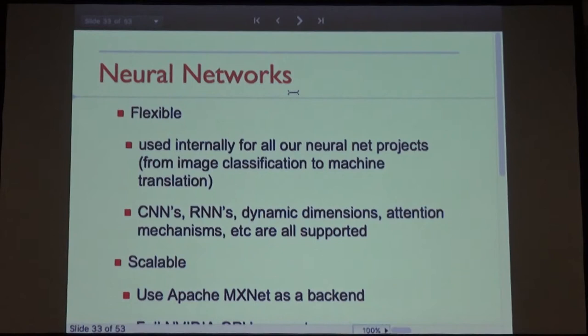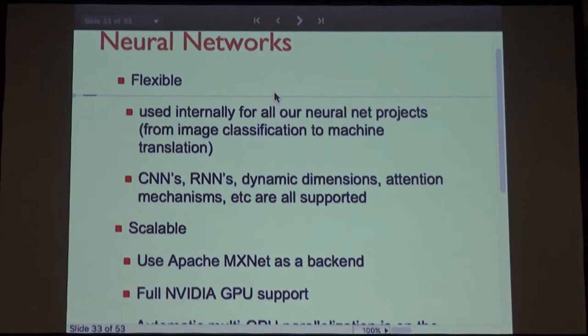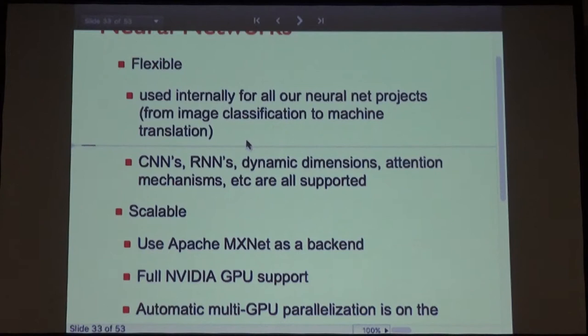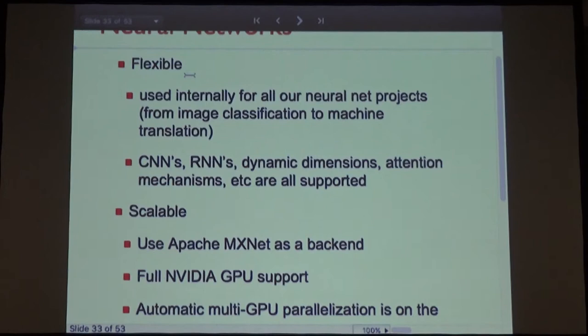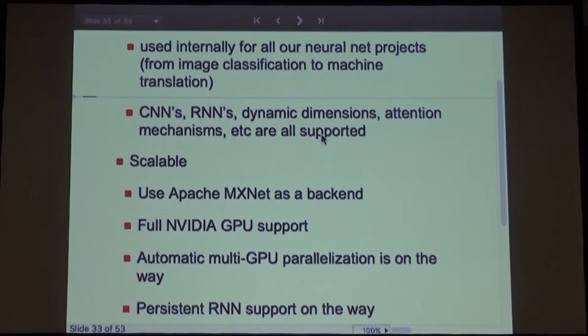Neural networks — this is more my domain. There's a proliferation of neural network frameworks. Even yesterday, Caffe 2 was released. Our framework is used for our own projects from image classification to machine translation to speech recognition — so it's going to be very battle-tested. It obviously has CNNs, RNNs, dynamic dimensions, attention mechanisms, etc. It's very scalable — we're using Apache MXNet as a backend, with full GPU support.